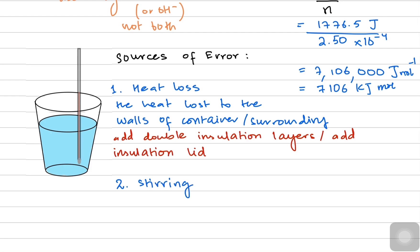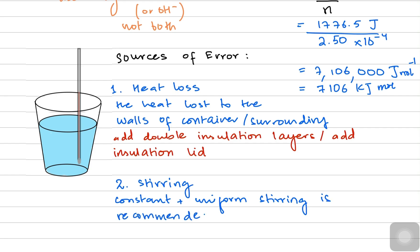The second source of error is non-uniform stirring. You must ensure constant and uniform stirring because the water has to be warmed up uniformly for you to make the assumption that water is the main mass being heated. That is why constant and uniform stirring is recommended.